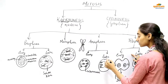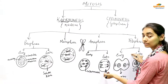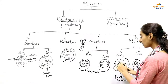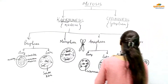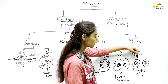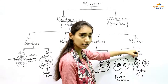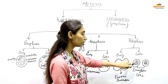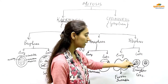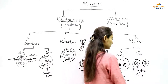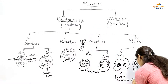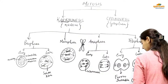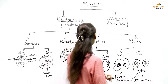In late anaphase, furrowing begins between the cells so that it divides equally, and the nuclear membrane, nucleus, and spindle fibers reappear. In telophase, the daughter cells are formed with the nucleus, chromatin fibers, nuclear membrane, and cell wall. We have to notice that the chromatids decondense here to form chromatin fibers — condensation reverses at this stage.